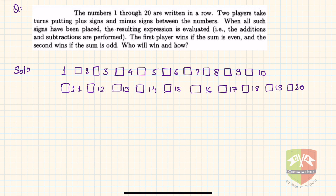Let's say the first person puts a plus sign between 5 and 6, and the second person puts a minus sign. Then again the first person puts minus here and the second person puts plus here, and likewise they continue. So we have to find out who will win. The first player wins if the sum is even and the second player wins if the sum is odd.